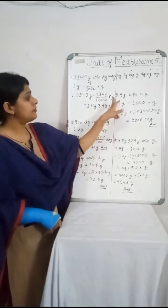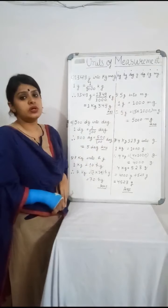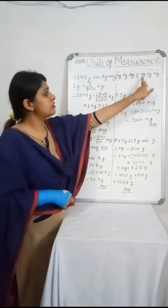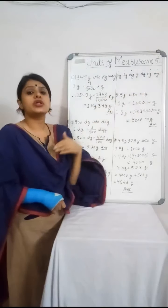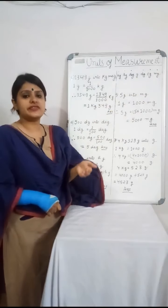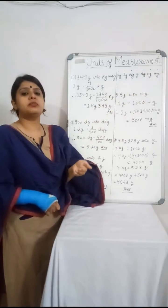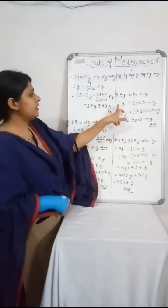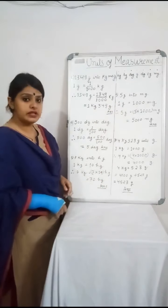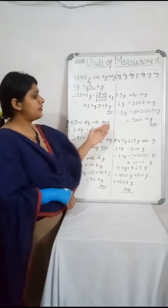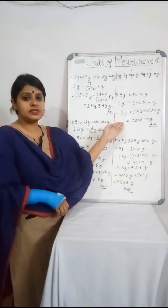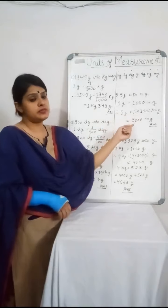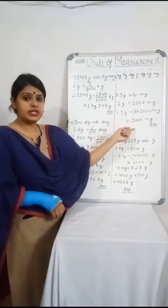F. Convert 5 grams into milligrams. We go 3 steps forward, which means we multiply by 10 × 10 × 10, that is 1000. So 1 gram is equal to 1000 milligrams. Therefore 5 grams will have more milligrams — that is 5 multiplied by 1000 milligrams, which is 5000 milligrams.